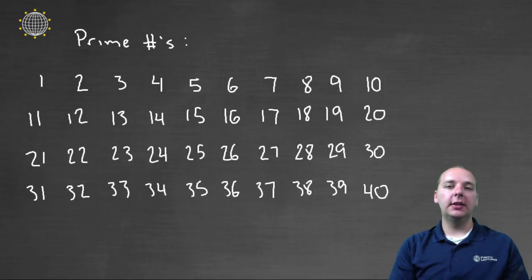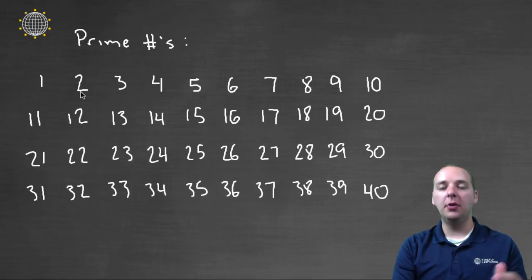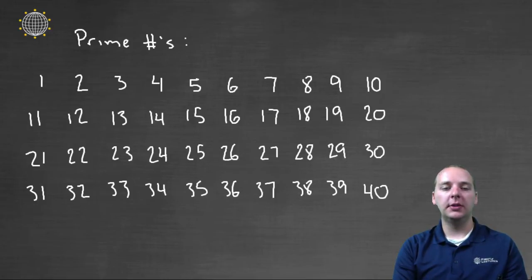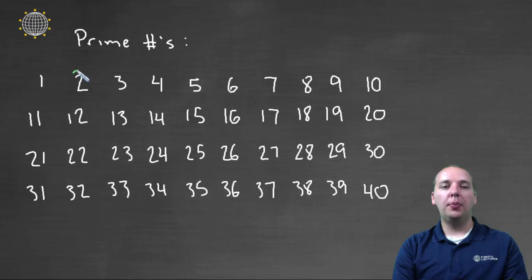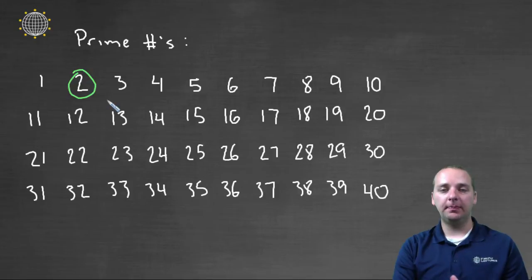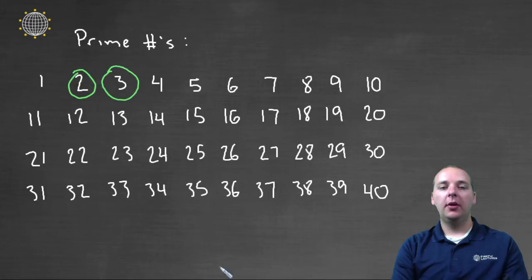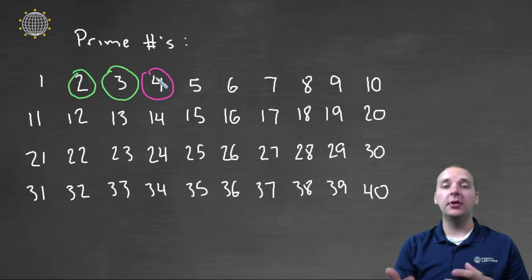Let's look at the first forty numbers and circle the prime numbers, and also circle the composite numbers with a different color. Two would be a prime number, because the only way that two factors are one and itself, and it's greater than one. Three is a prime number. Four is not — four is a composite number, because it does factor with factors other than one and four, like two times two.